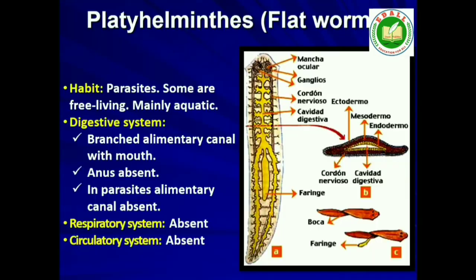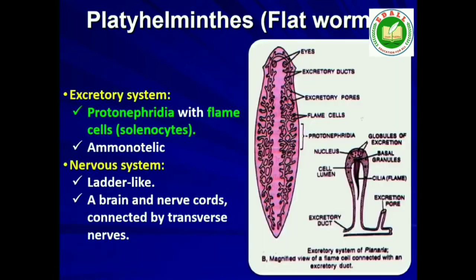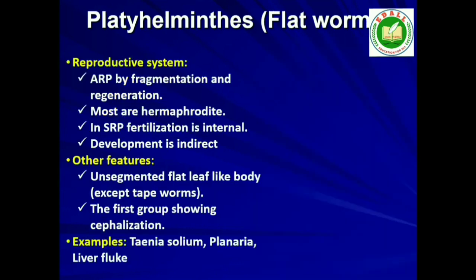Fourth is Phylum Platyhelminthes. They have a dorsoventrally flattened body, hence are called flatworms. These are mostly endoparasites found in animals including human beings. Flatworms are bilaterally symmetrical, triploblastic and acoelomate animals with organ level of organization. Hooks and suckers are present in the parasitic forms. Some of them absorb nutrients from the host directly through their body surface. Specialized cells called flame cells help in osmoregulation and excretion. Sexes are not separate. Fertilization is internal and development is through many larval stages. Some members like Planaria possess high regeneration capacity. Examples: Taenia (tapeworm), Fasciola (liver fluke).